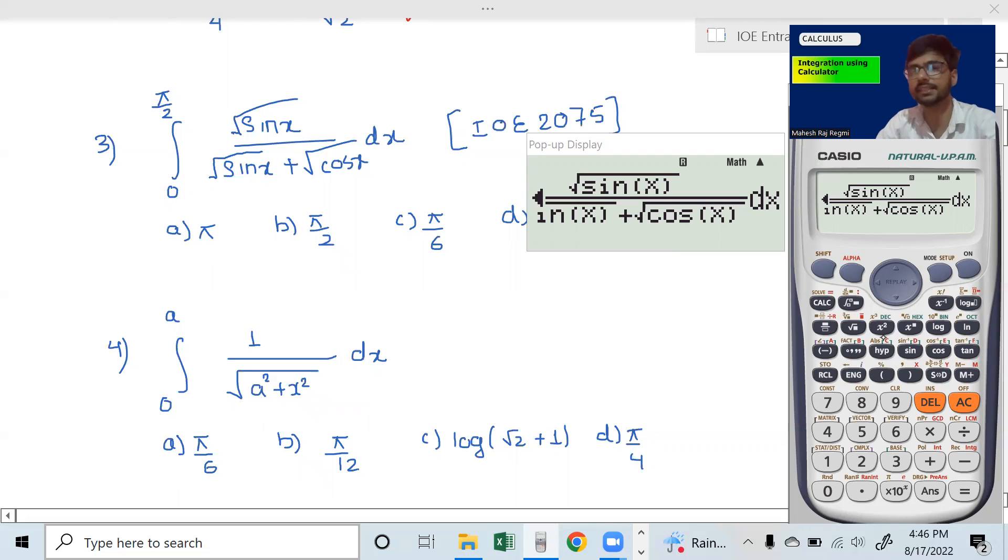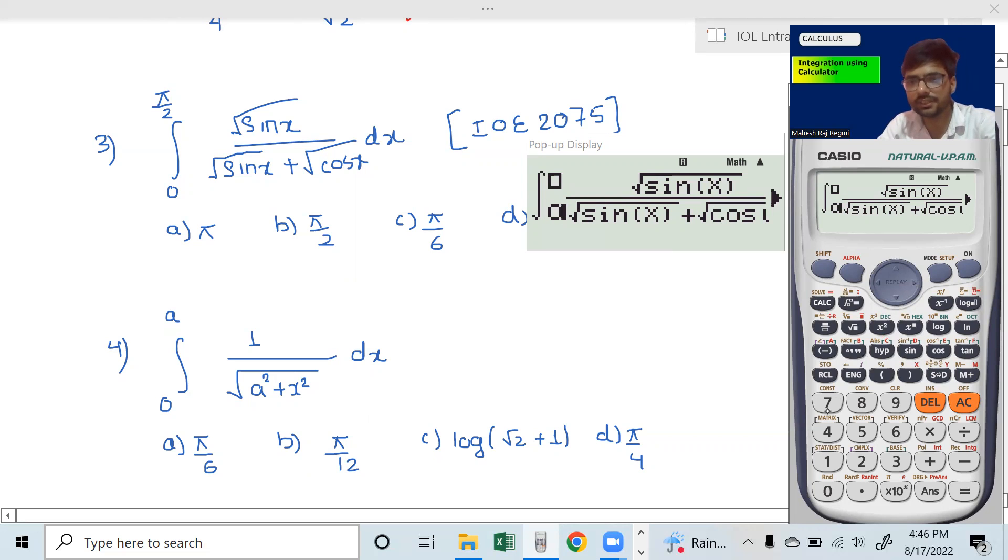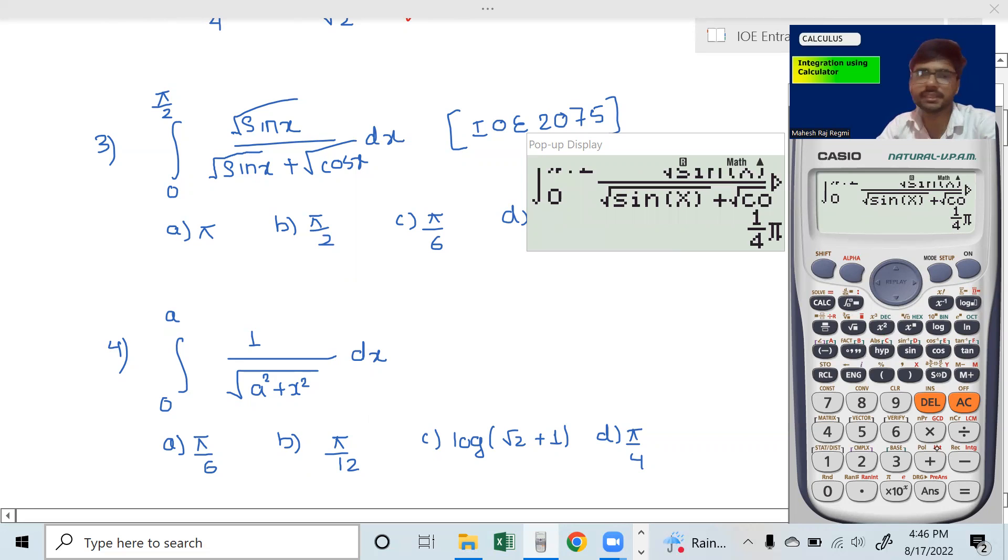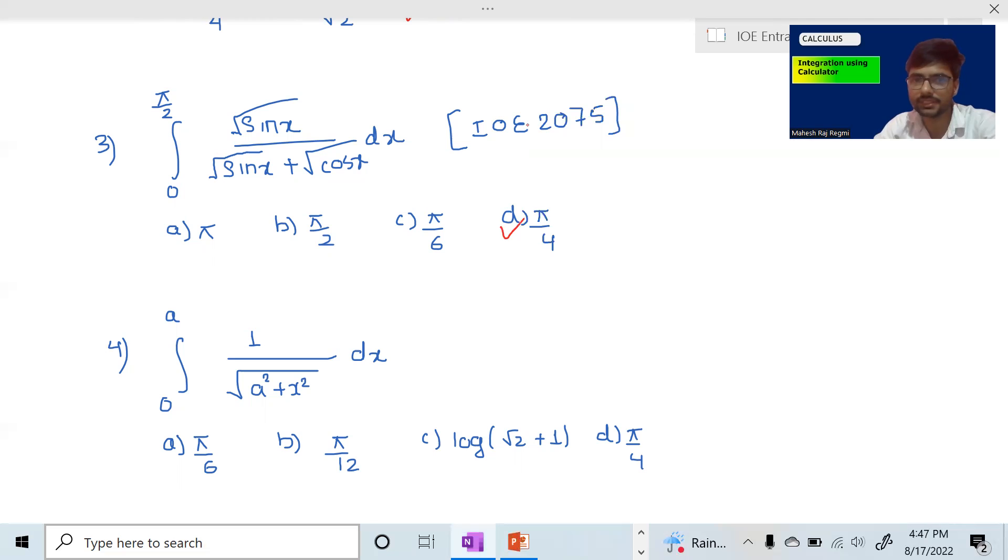Type in the calculator. Syntax error when the bracket is not closed. From 0 to pi divided by 2, so we have pi divided by 4. Answer is D.